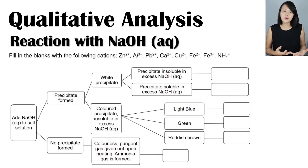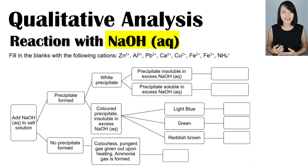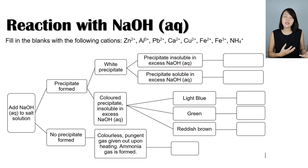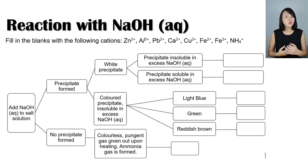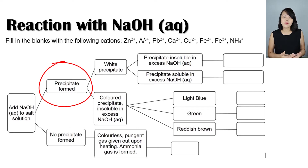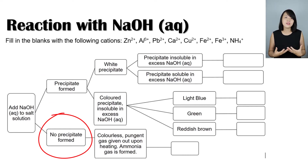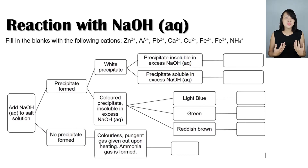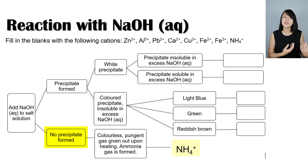In this video we'll be focusing on identifying ions with the use of aqueous sodium hydroxide. When we add aqueous sodium hydroxide to a salt solution, there are two possible outcomes: a precipitate will form, or a precipitate will not form. In a cation test, the only cation that does not produce a precipitate with the addition of sodium hydroxide is the ammonium ion.